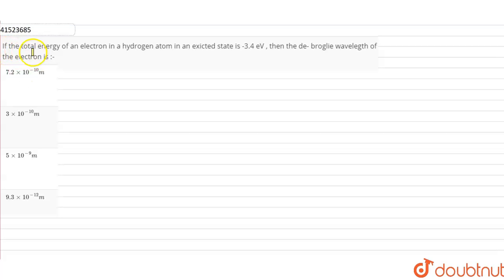In this question, if the total energy of an electron in a hydrogen atom in an excited state is minus 3.4 eV, then what is the de Broglie wavelength of the electron?